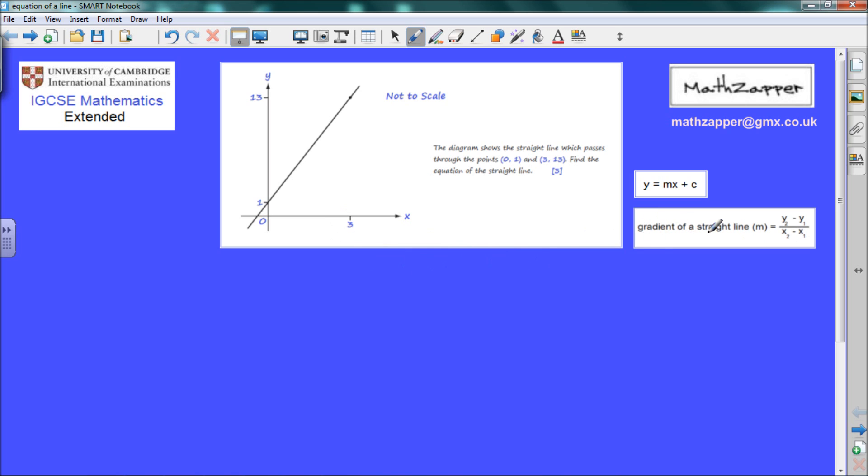So we will start by trying to find the gradient of the straight line. We can start by saying m is equal to second value of y minus first value of y, so 13 minus 1,